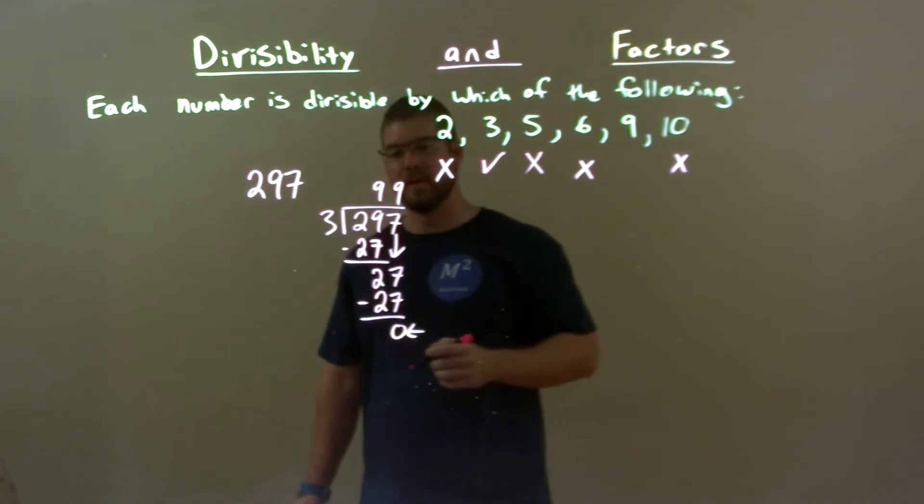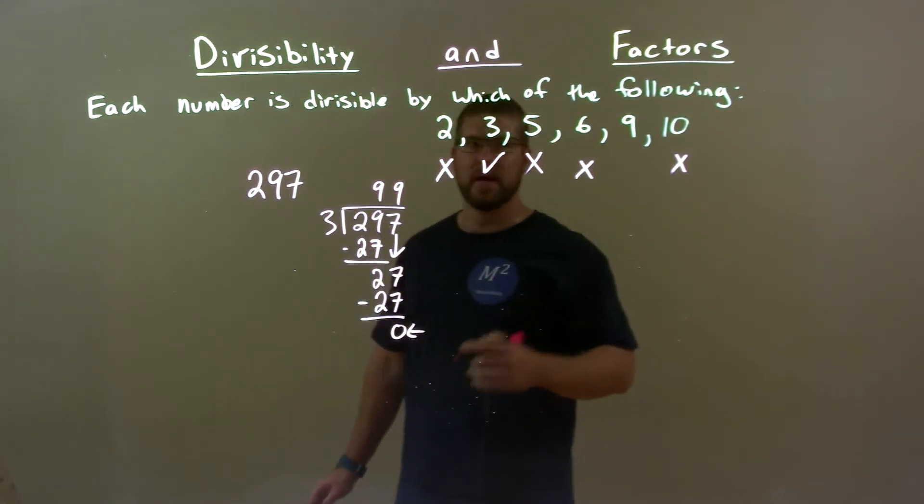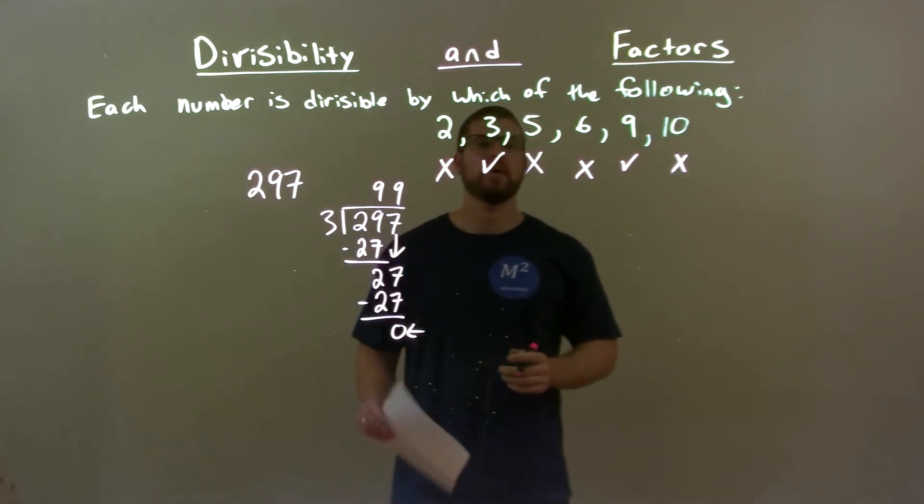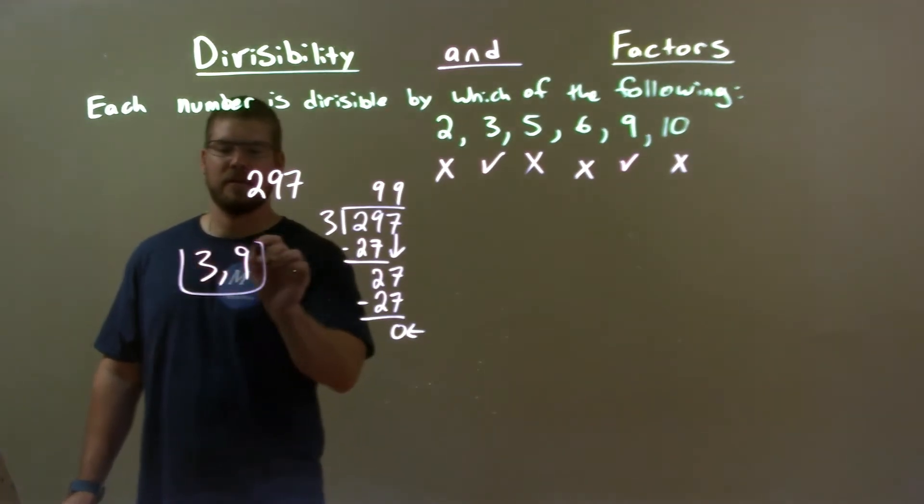9. Well, since 3 goes into 297, 9 must also go into 297. 9 is good. We already determined 10 was out, so our final answer here is just 3 and 9.